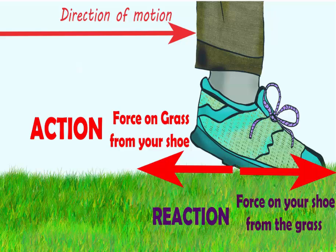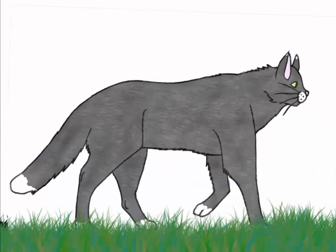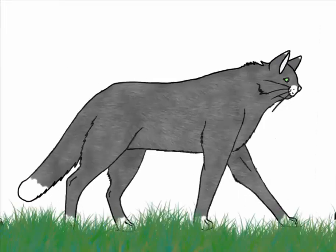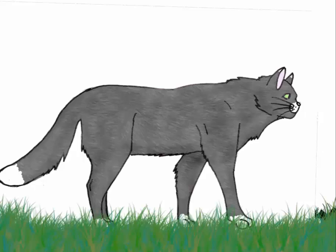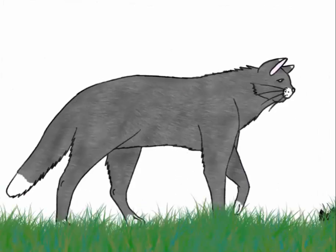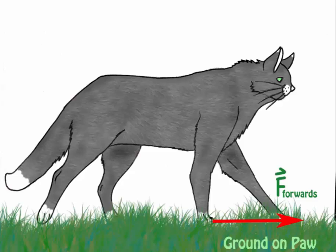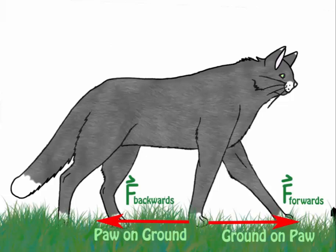These are both static friction forces because the shoe does not move while it is in contact with the ground. Now we'll use another example to further advance this. Here we have a cat walking, and we have the same action-reaction forces happening between the cat's paws and the ground. Every time the cat takes a step, there is a force exerted on the grass and the grass exerts a force on the paw. We have the ground on paw, which is the forward force, and we have the backward force, which is paw on ground. This is an action-reaction pair, and as in the previous example, these are static friction forces.